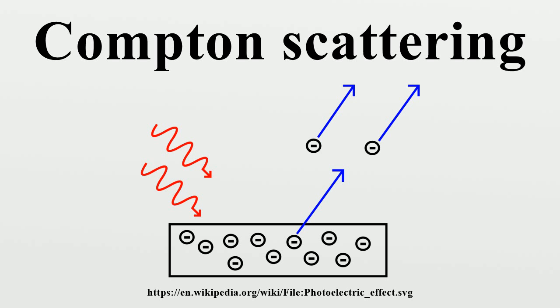Introduction: Compton scattering is an example of inelastic scattering of light by a free charged particle, where the wavelength of the scattered light is different from that of the incident radiation. In Compton's original experiment, the energy of the X-ray photon was very much larger than the binding energy of the atomic electron, so the electrons could be treated as being free.